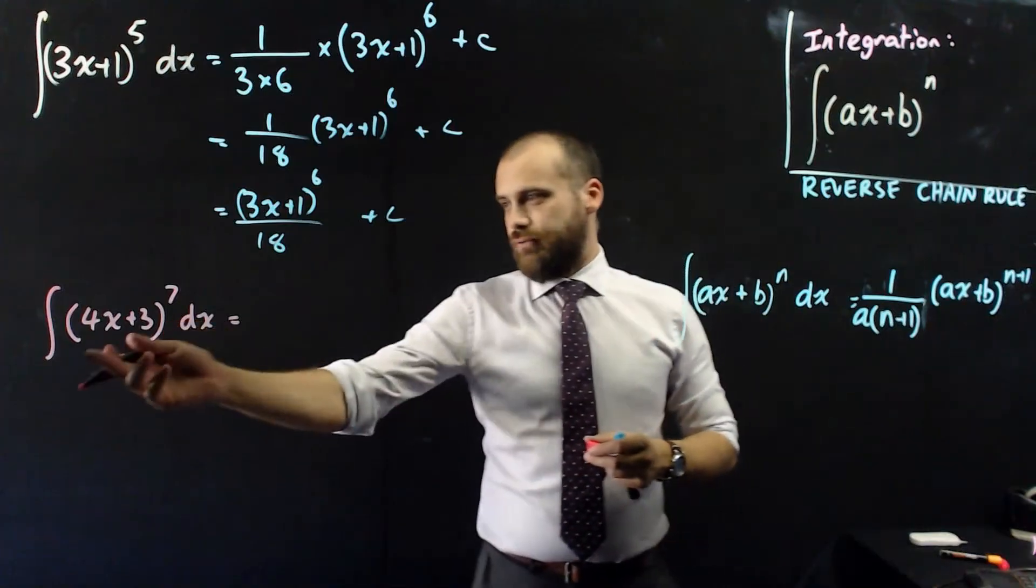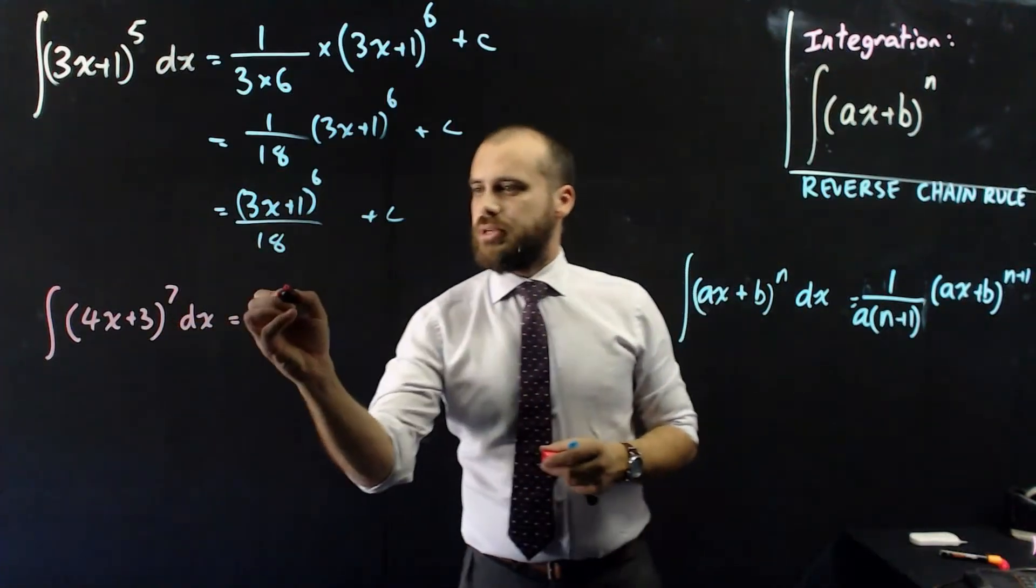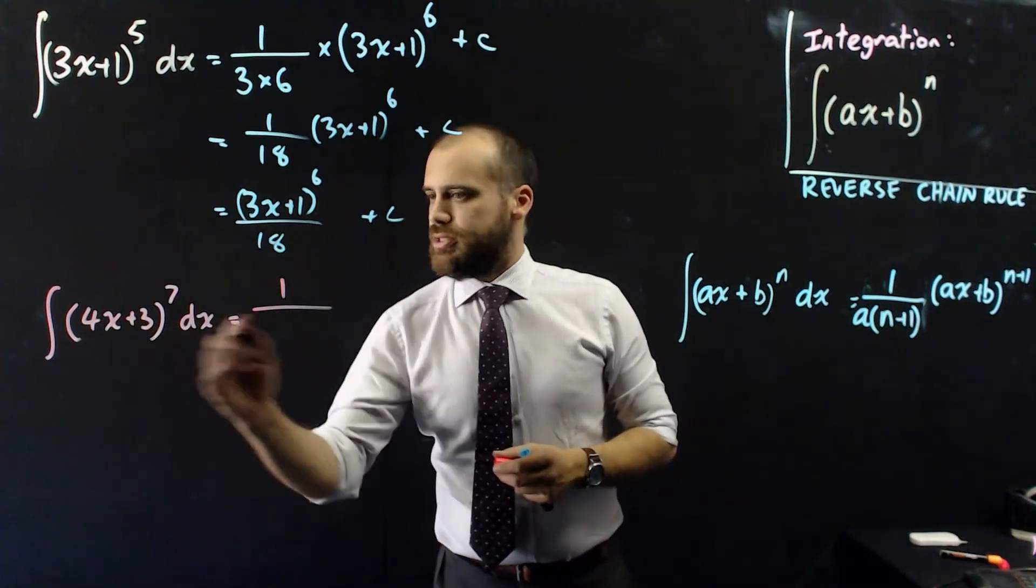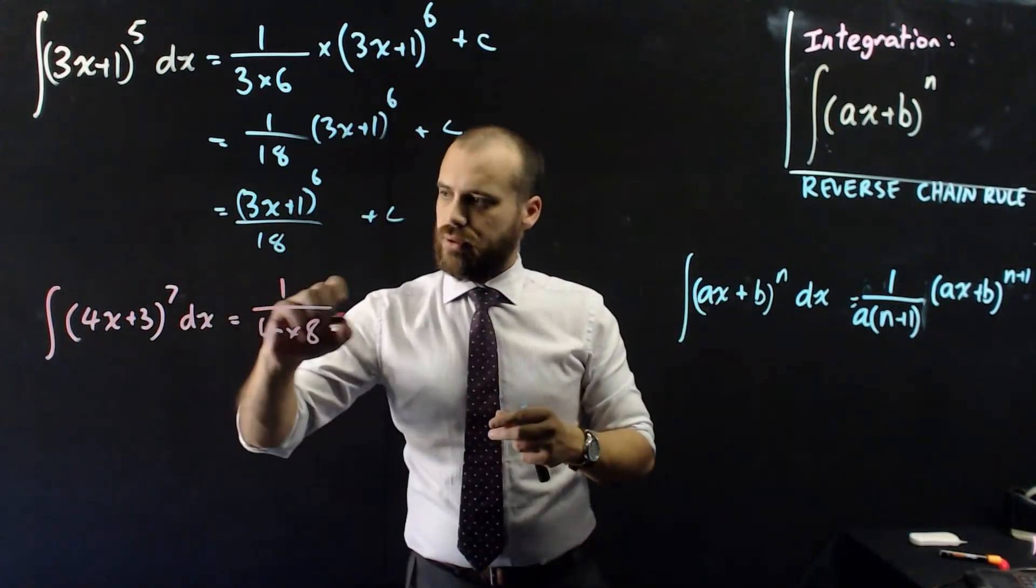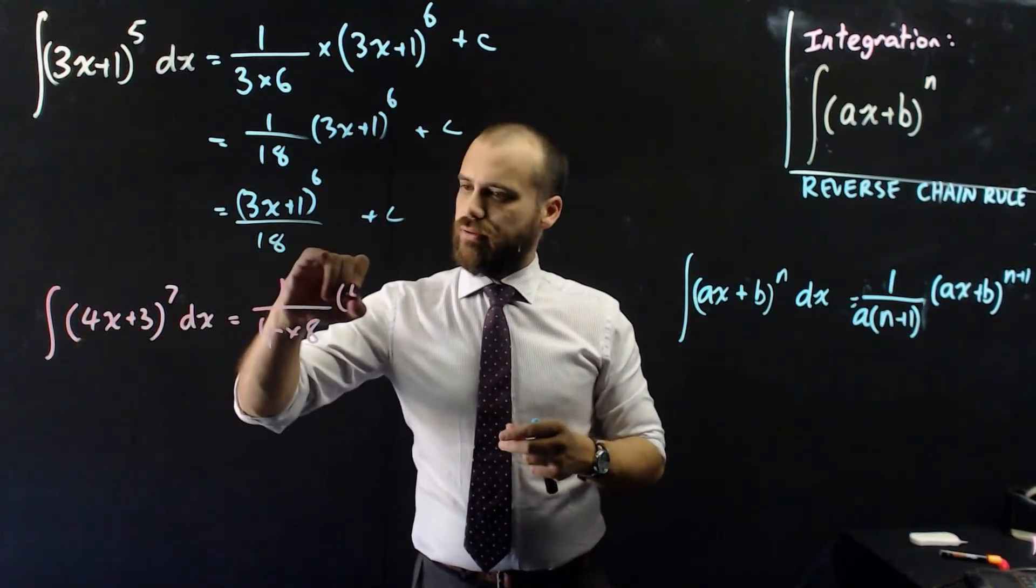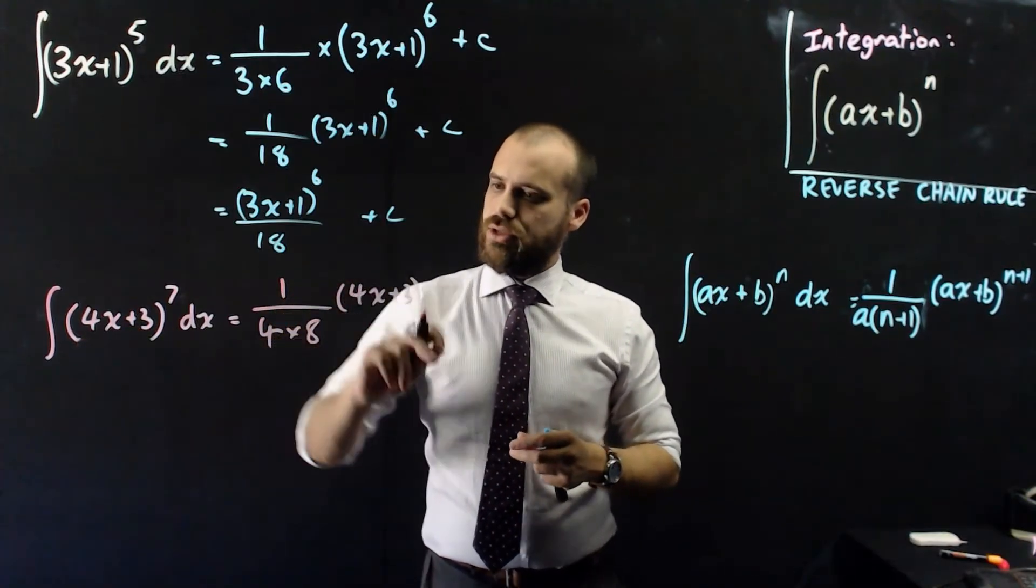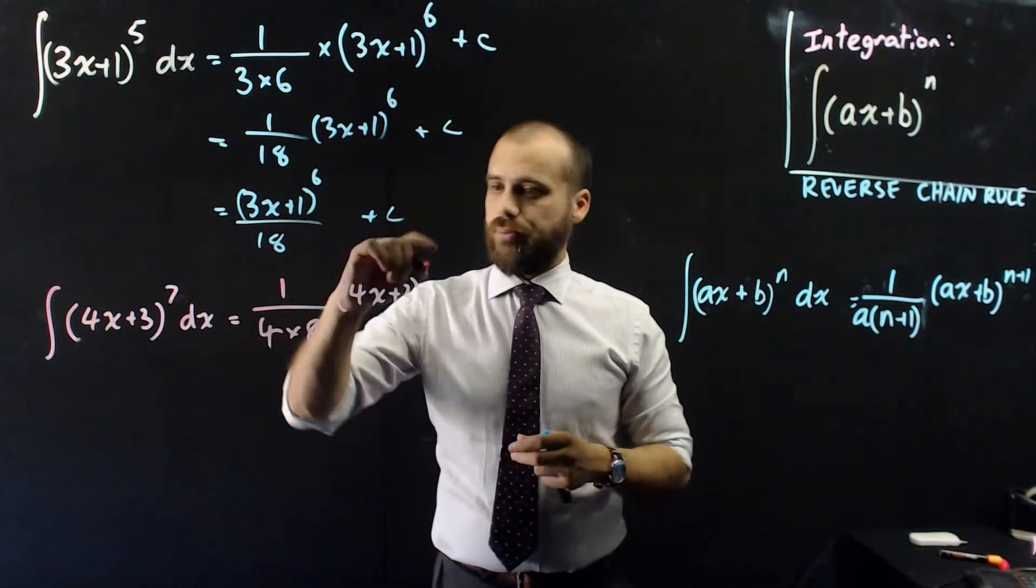So the integral of 4x plus 3 to the power of 7 is going to be equal to 1 over this number here times this power plus 1. Then this bracket, 4x plus 3, to the power of this power plus 1.